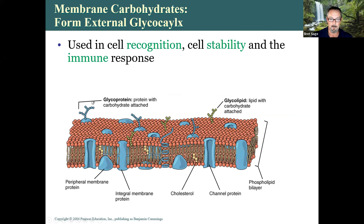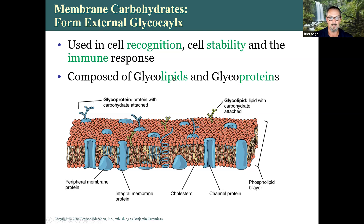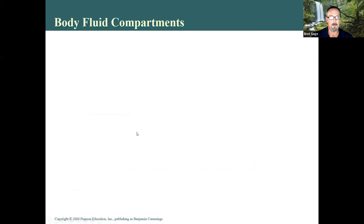The glycocalyx is made up primarily of glycoproteins but also glycolipids, sticking out from the cell surface. White blood cells involved in cell recognition check whether this is self or an invader. It provides cell recognition, cell stability, and immune response, and is composed of both glycolipids and glycoproteins.